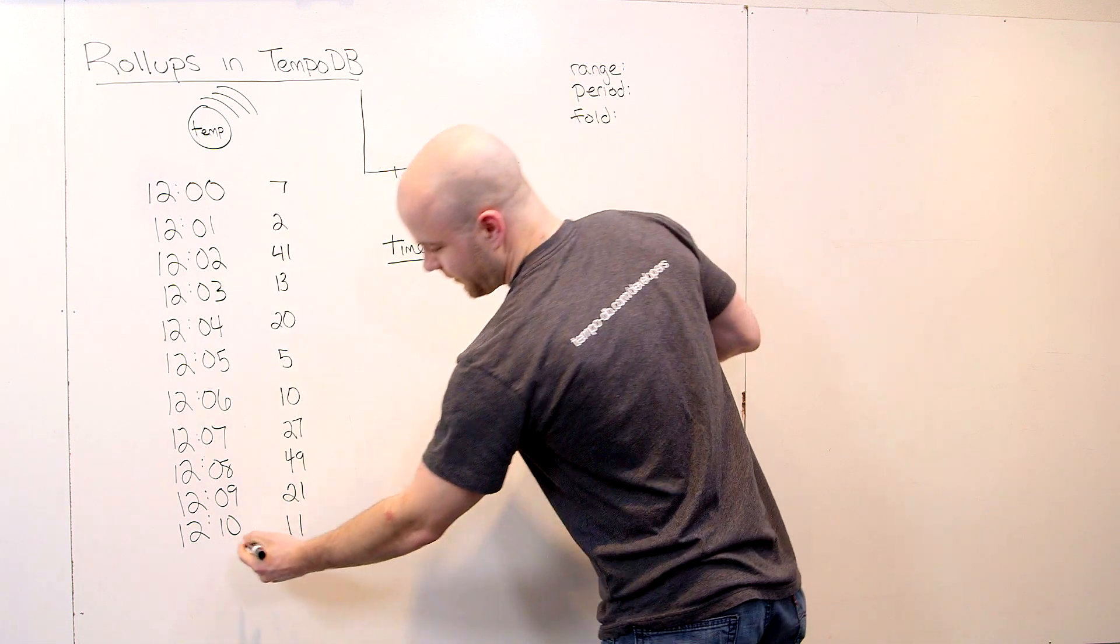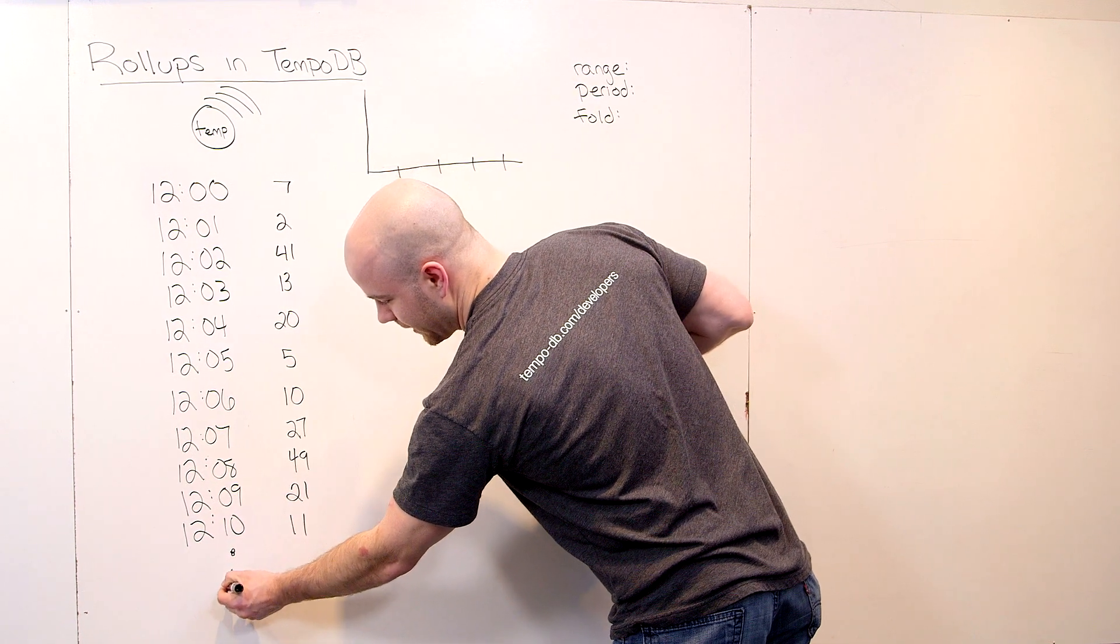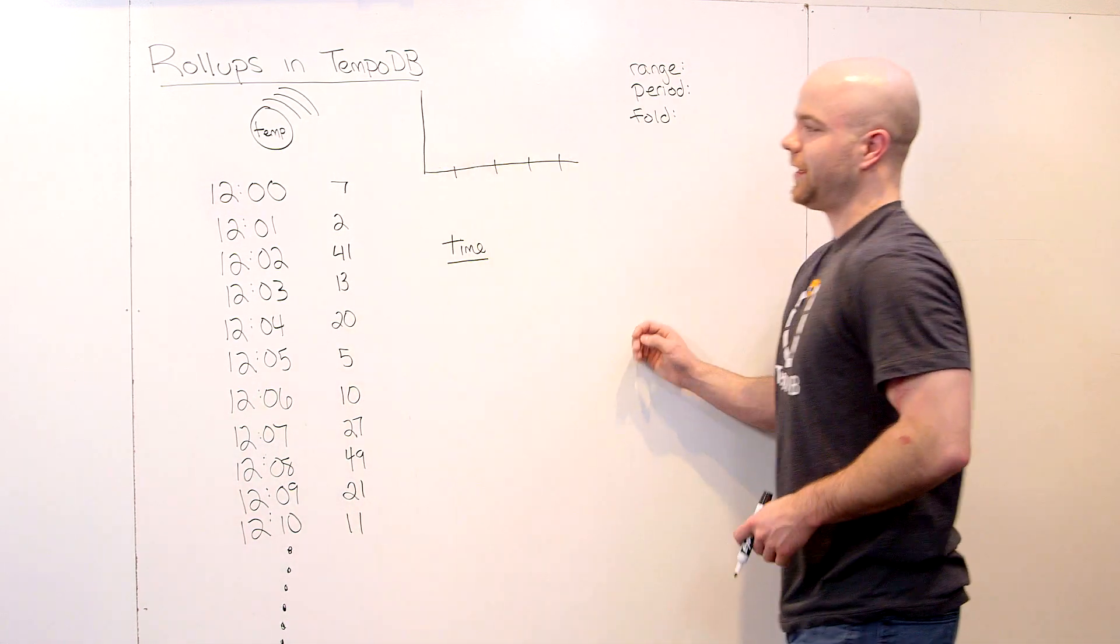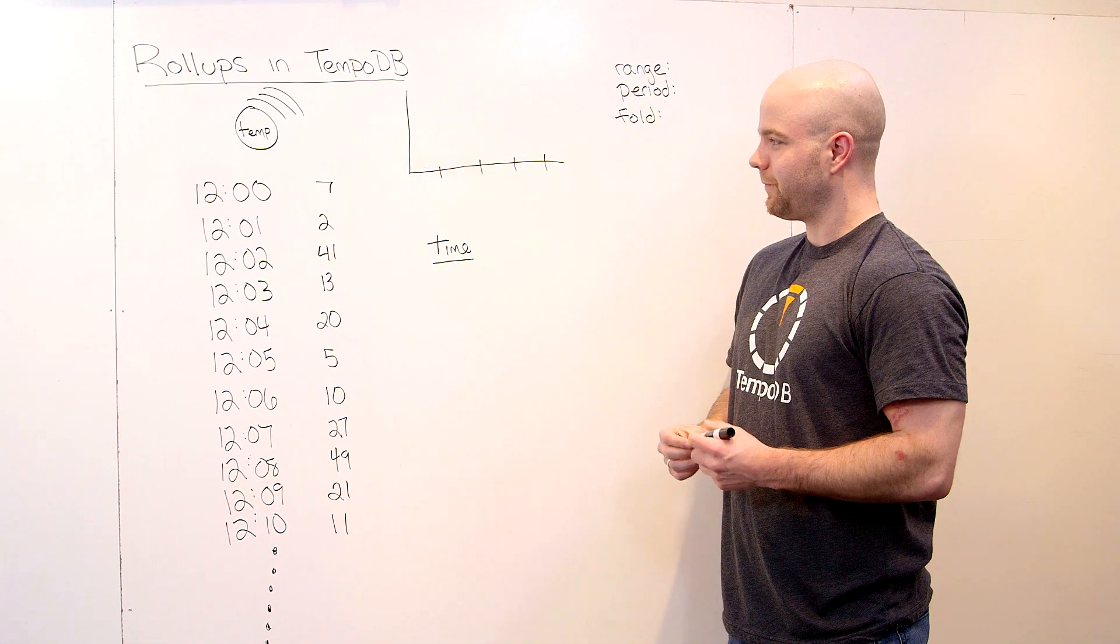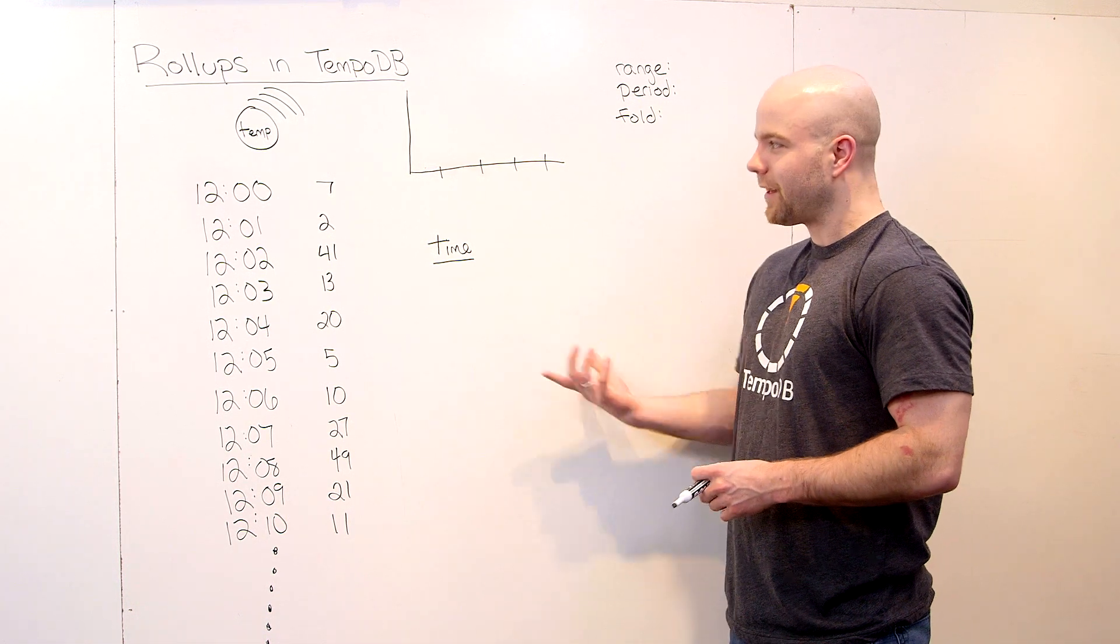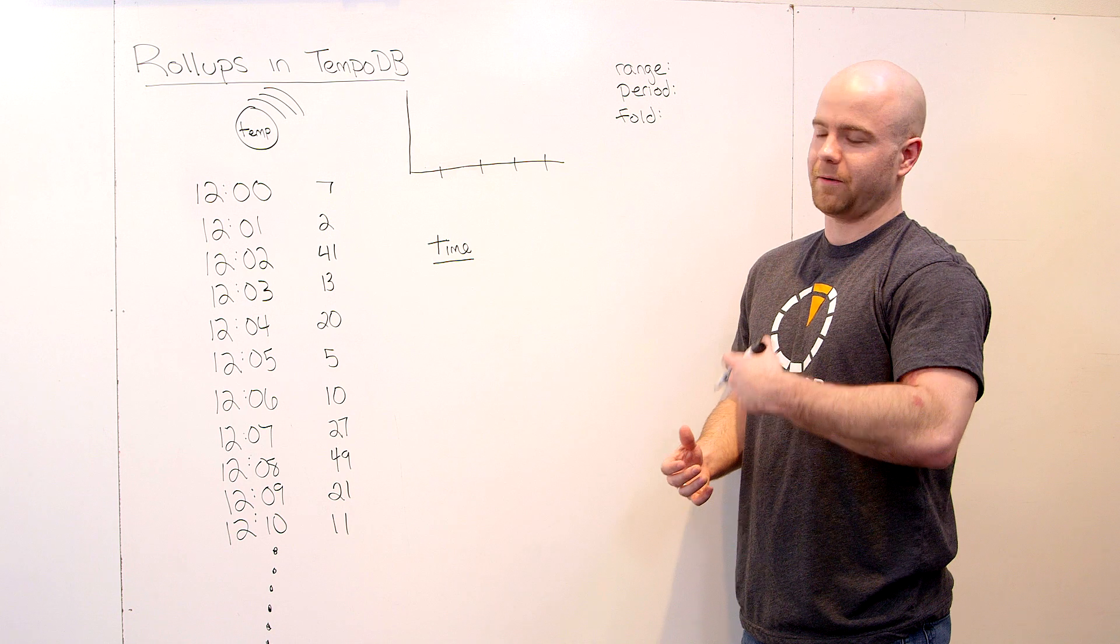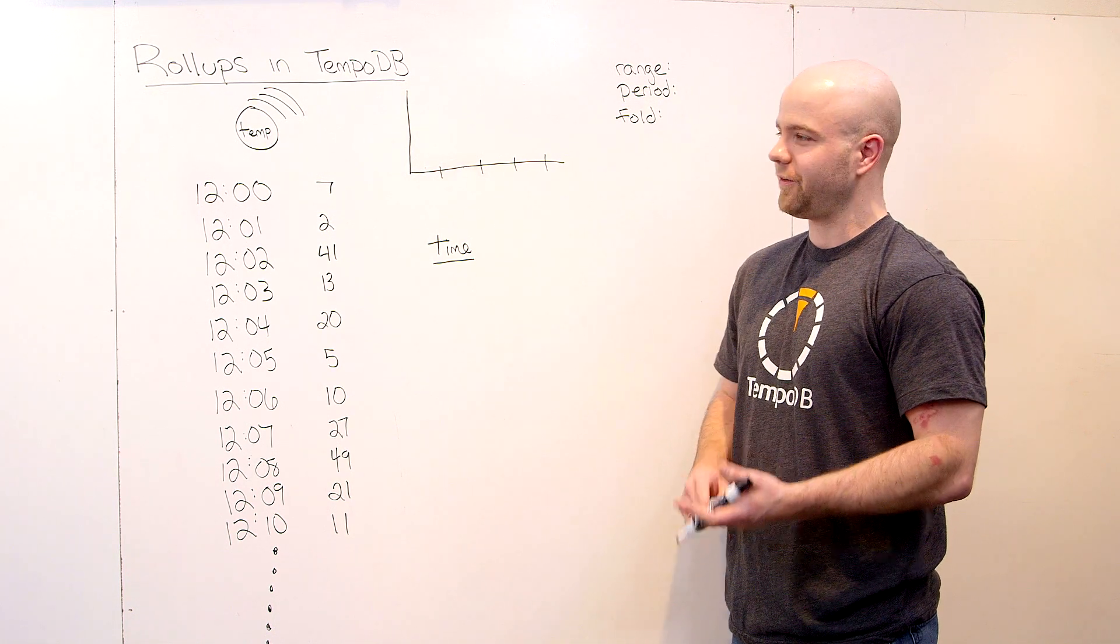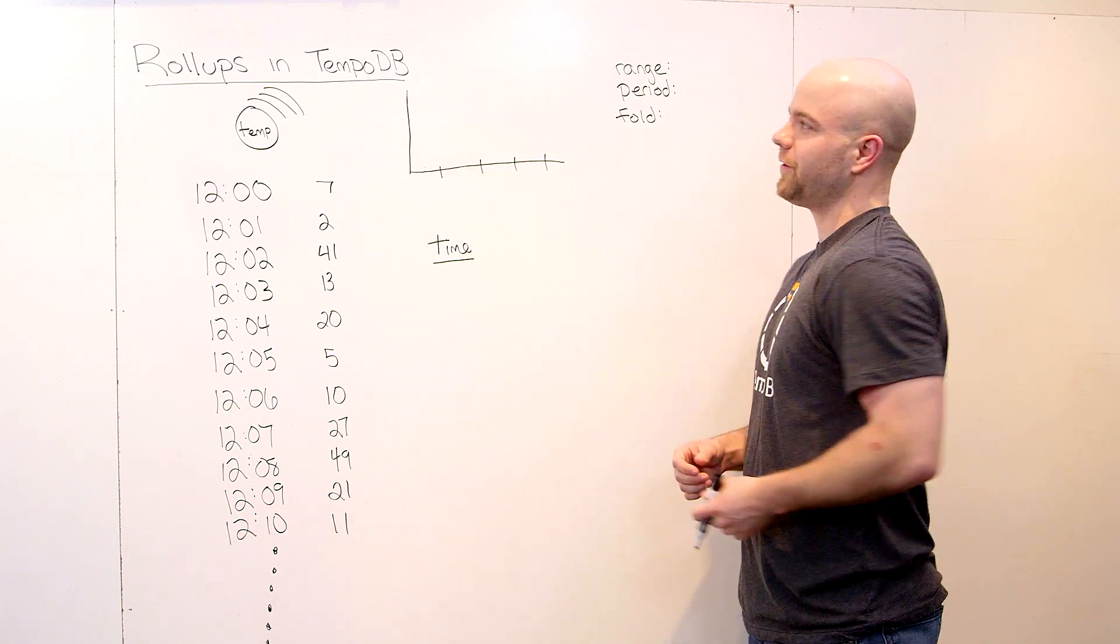And this stream of data points can continue on as far into the future as it goes, and roll-ups are one way to analyze this. So this stream of data, for instance, is sampled at a minute rate. We get one reading every minute. But we might like to be able to analyze this data on a daily resolution, on a five-minute resolution, getting the averages, the mins, and the maxes. That's what you can use roll-ups to do.